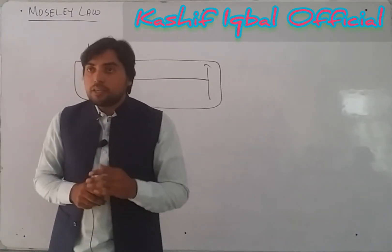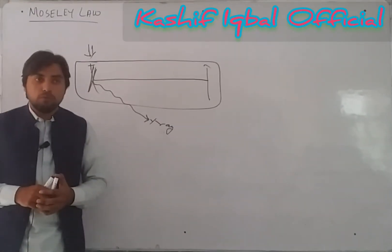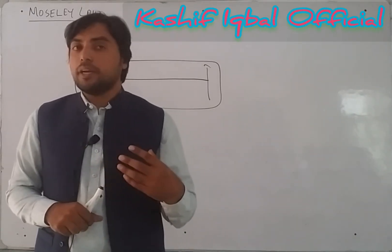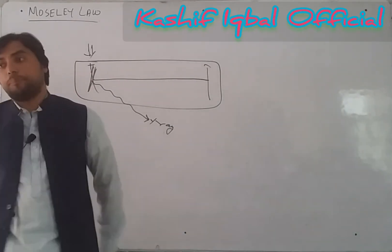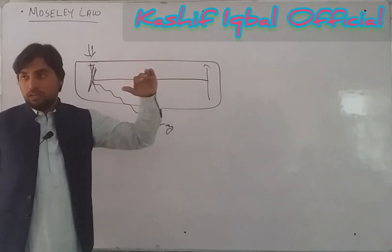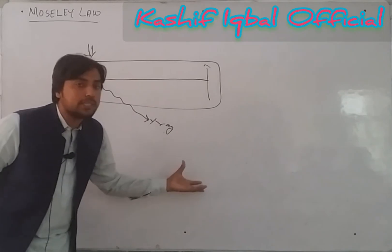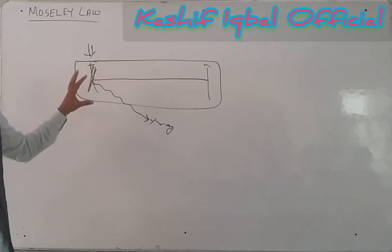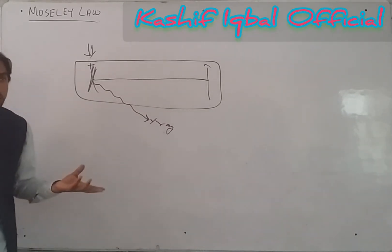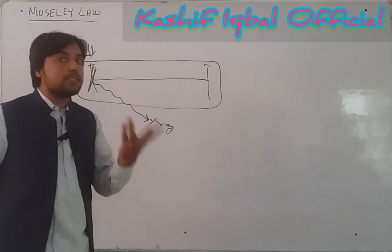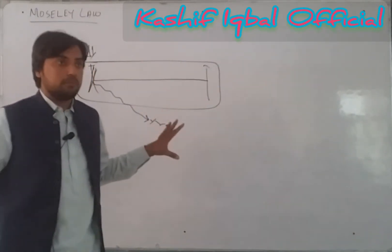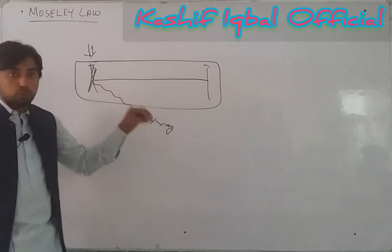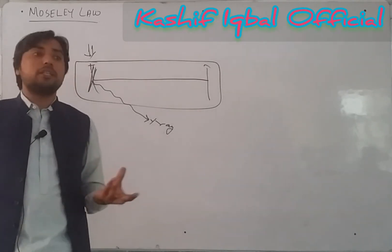It was found that when the anode is changed and the unit positive charge of the anode is increased, the frequency of the X-rays produced increases. The positive charge of the nucleus — which is due to the protons — is an important property of the atom. This positive charge is basically the atomic number: the unit positive charge present in the nucleus.